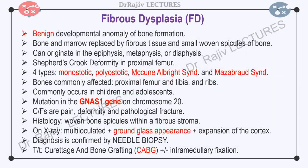Fibrous dysplasia is a benign developmental anomaly of bone formation. In it, the normal bone and marrow are replaced by fibrous tissue and small woven spicules of bone. A mass of fibrous tissue forms and grows inside the bone. A thin layer of subperiosteal bone forms around the mass and so the lesion appears expanded with ground glass appearance on plain radiograph. Fibrous dysplasia can originate in the epiphysis, metaphysis, or diaphysis. There is bowing and cortical thinning of the affected bone. The Shepherd's Crook deformity is the characteristic deformity of fibrous dysplasia of the proximal femur.